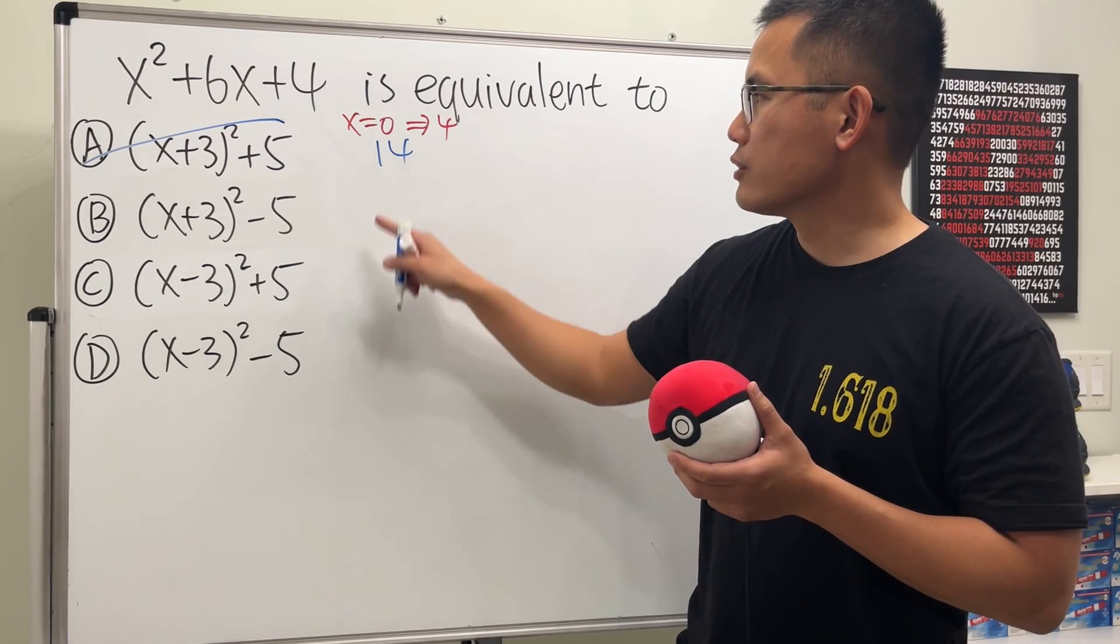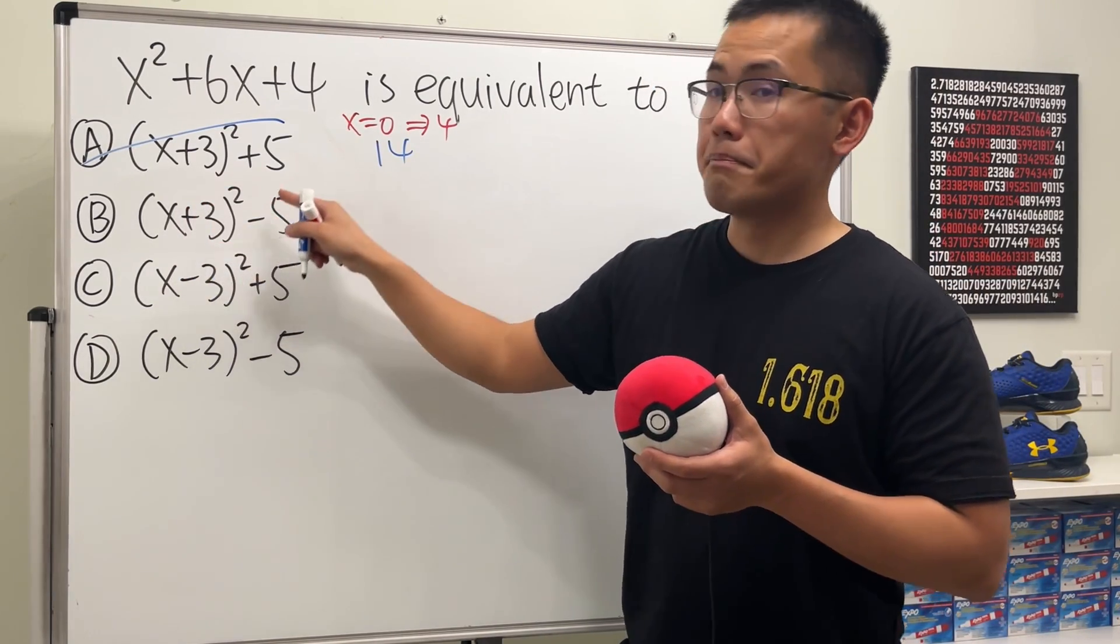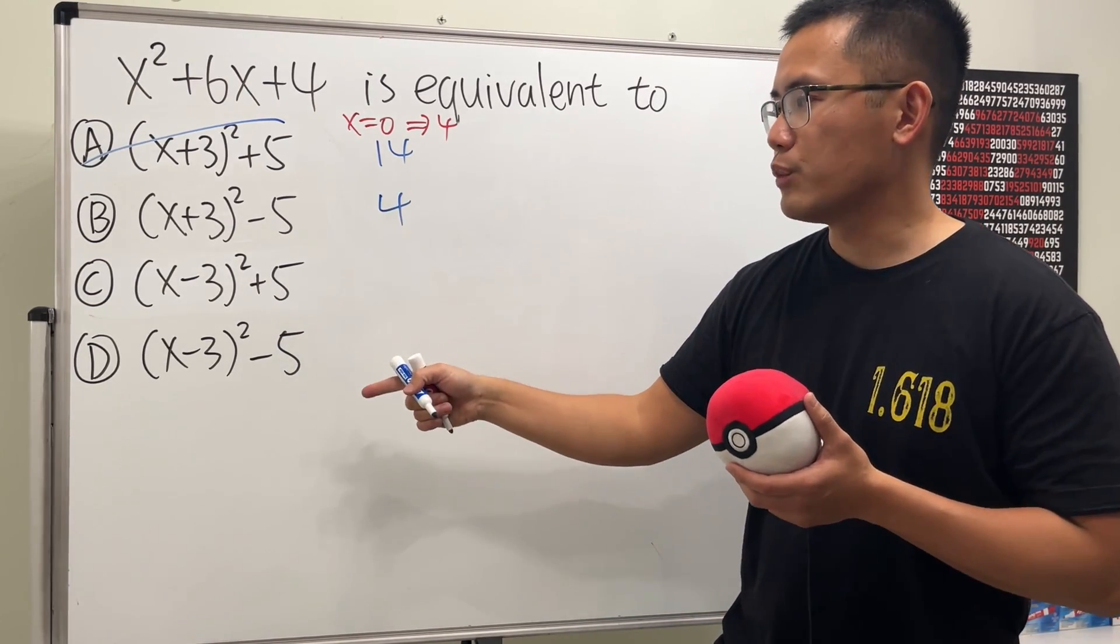And then, of course, we can also plug in 0 into this x. This is 3 squared, which is 9, but minus 5, this will give us 4. It could be the answer. We should also check the other ones.